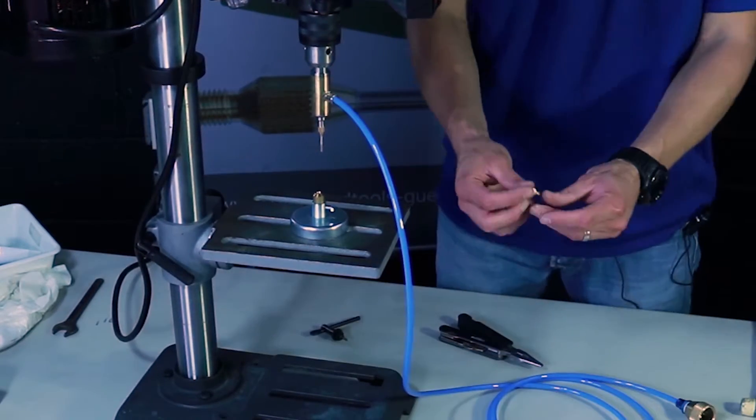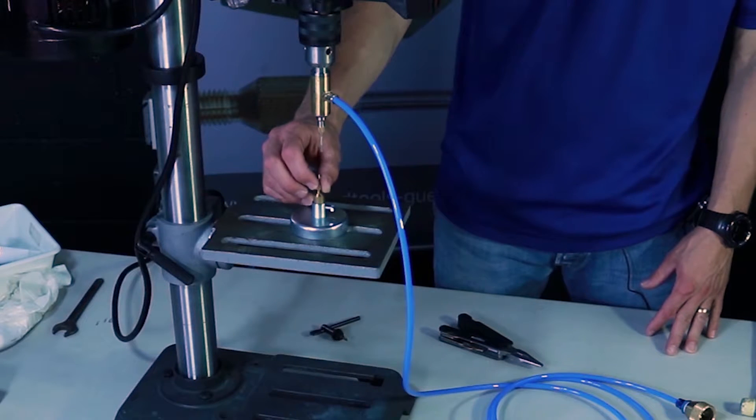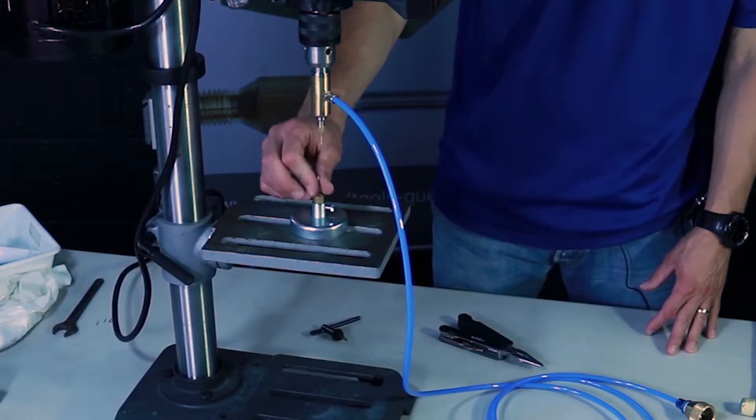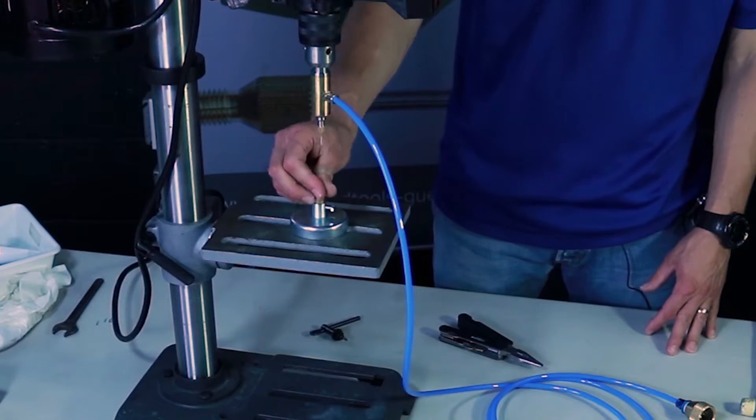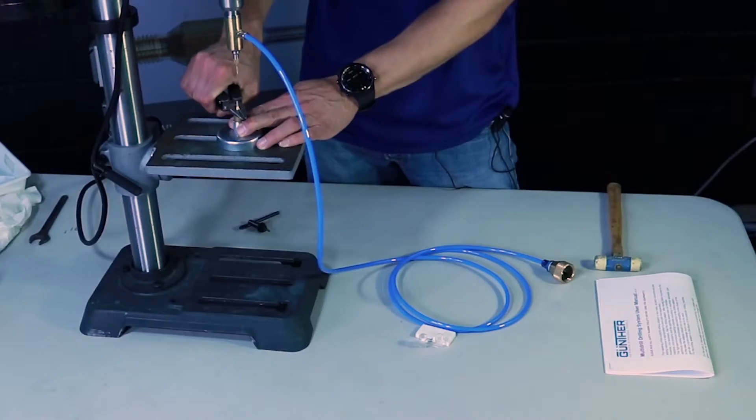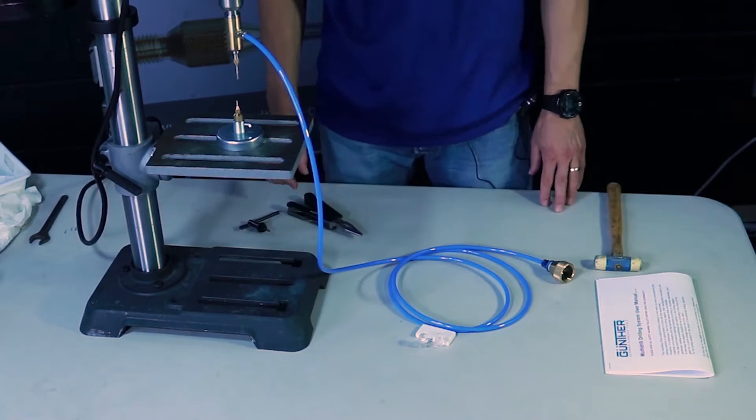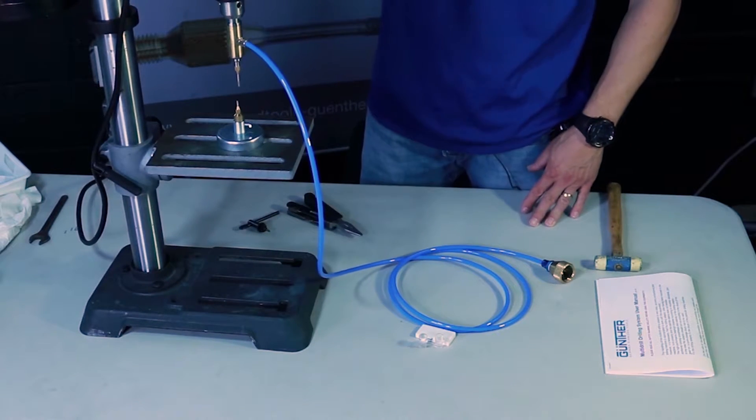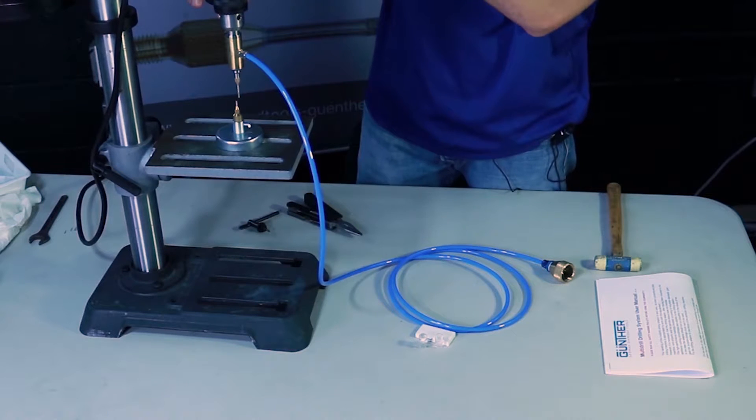Then you insert your counterpart and screw that down by hand. And again, do the same thing. Tighten it nice and snug so that it's not going to come loose.